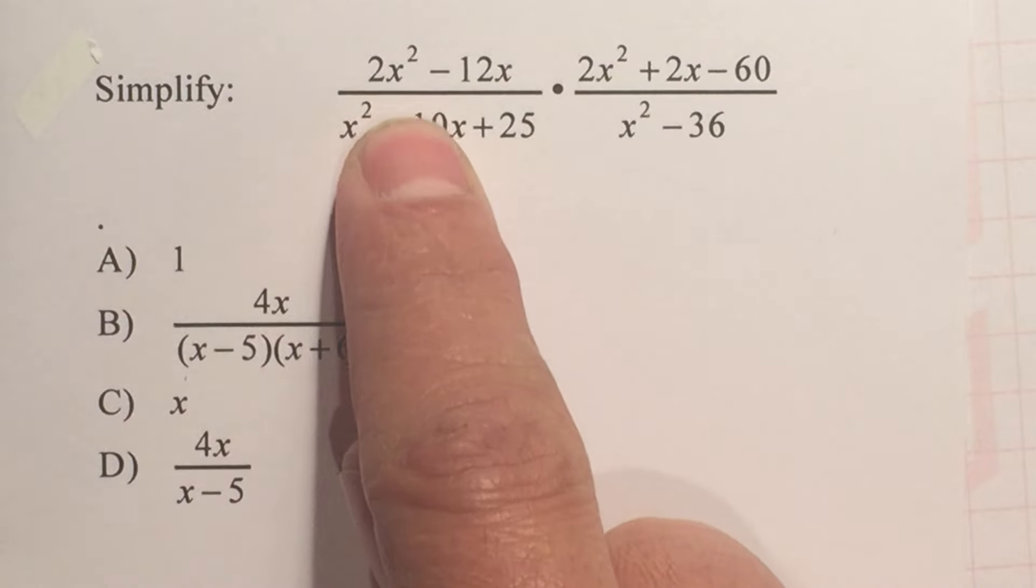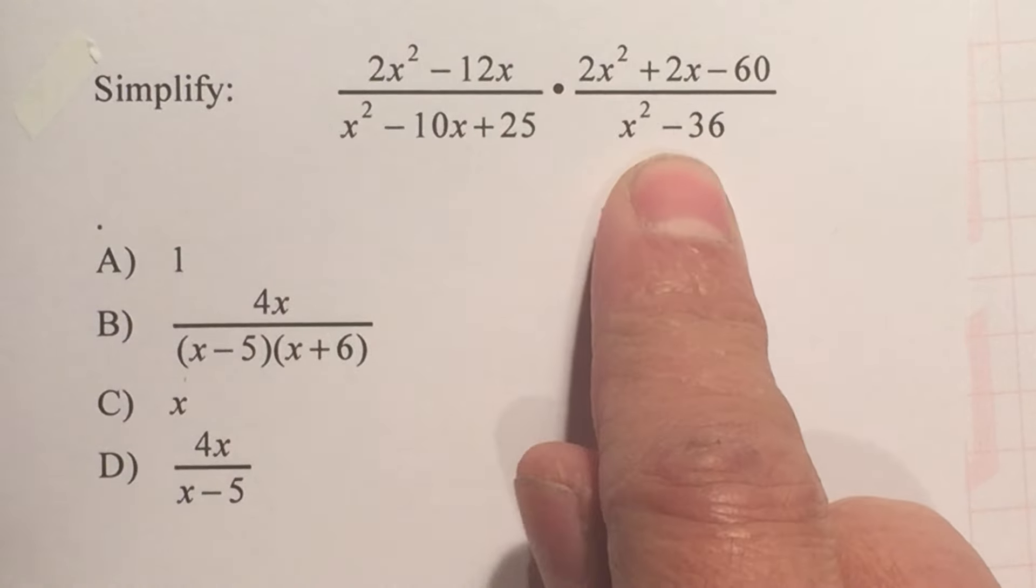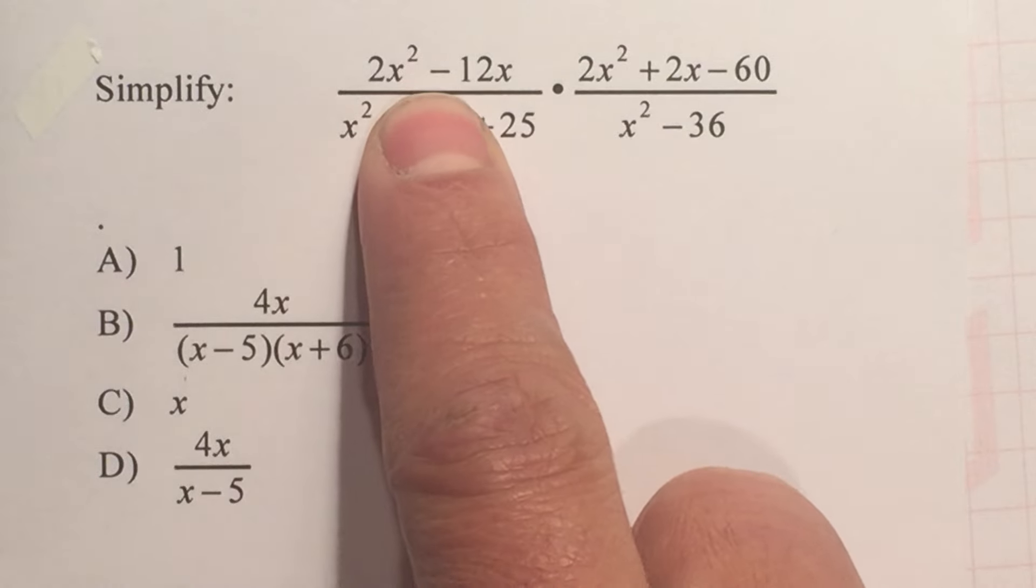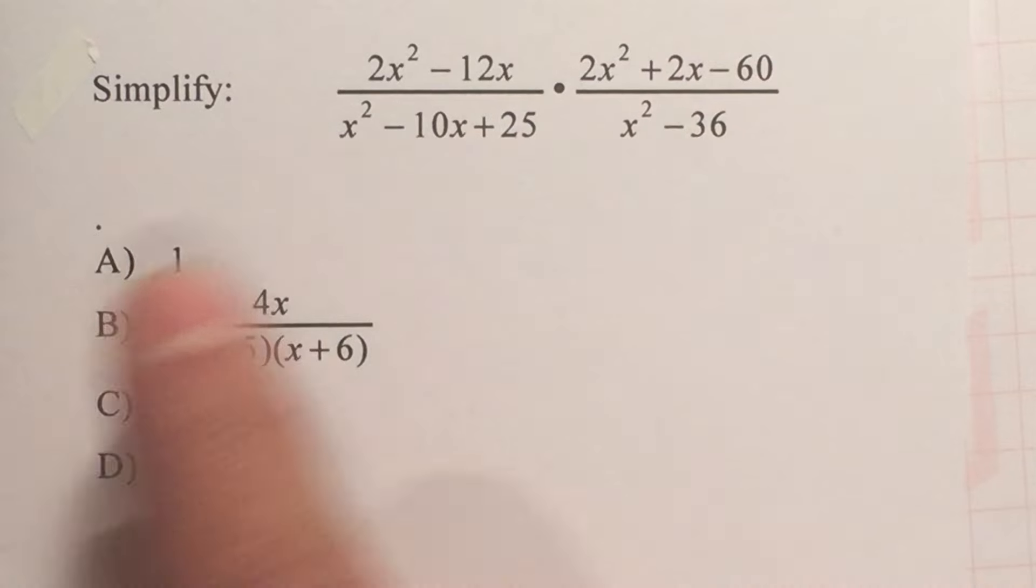Simplify. We have an expression that has two fractions that are multiplied and we have polynomials on each one. In order to be able to simplify, I need to be able to factor each of the polynomials and then we'll see what cancels.